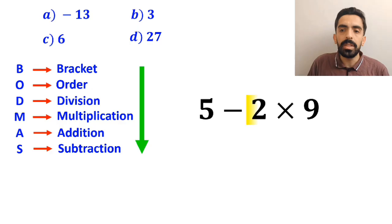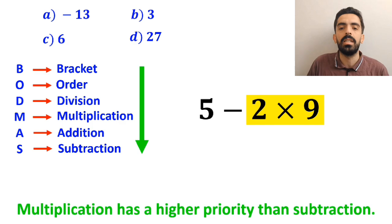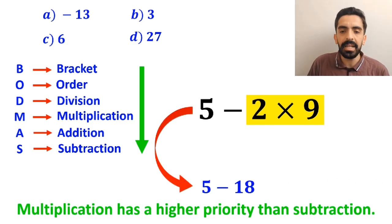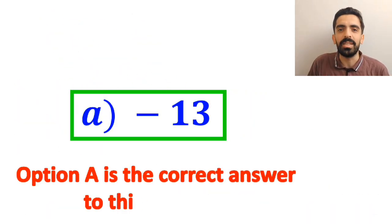Next, we move on to the multiplication between 2 and 9, because multiplication has a higher priority than subtraction. So, we'll write this expression as 5 minus 18, and finally, we get the answer negative 13. Therefore, option A is the correct answer to this question.